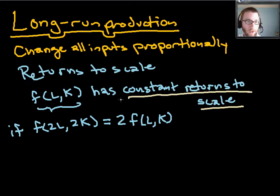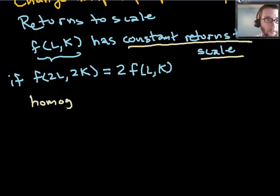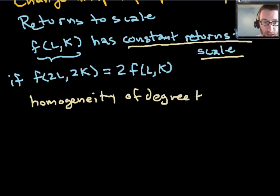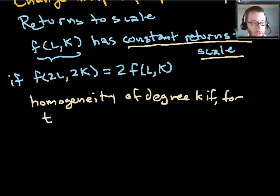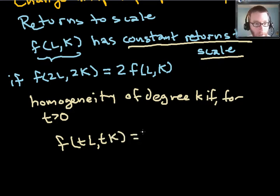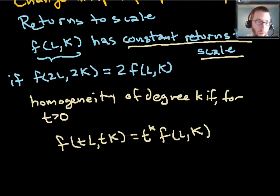More generally, we can say that a production function, or any function, is homogeneous, homogeneity of degree k, little k, not capital now, just some constant, if for t greater than 0, f of tL, tK equals t raised to the little k times f of L, K. Now, most functions are not homogeneous of any degree, but if they are homogeneous of a degree, and that degree is 1, then we can say that they have constant returns to scale.